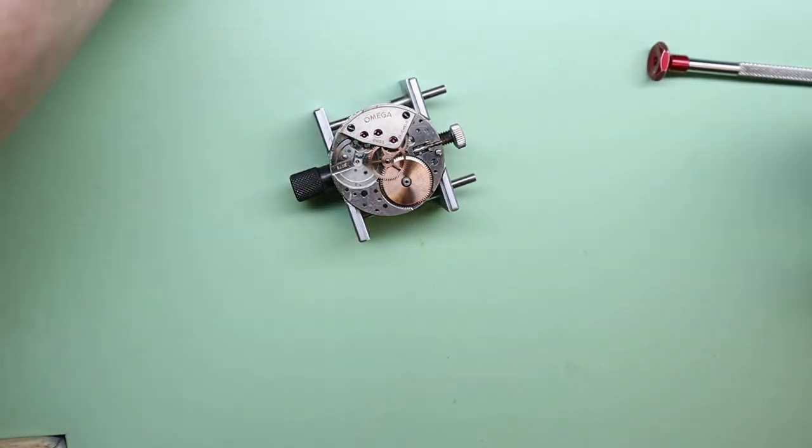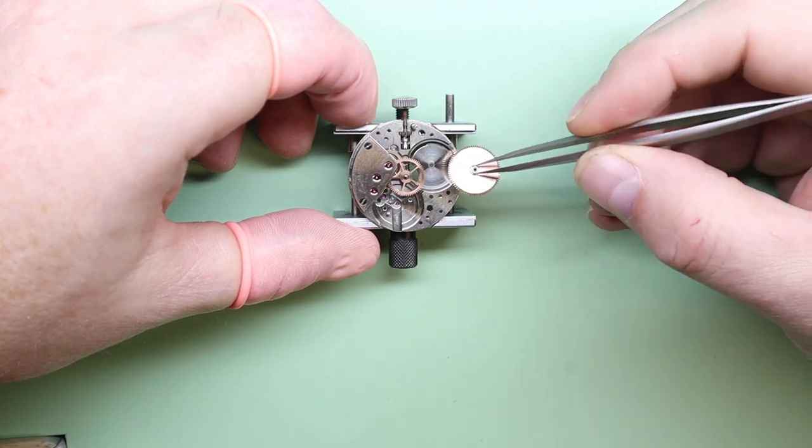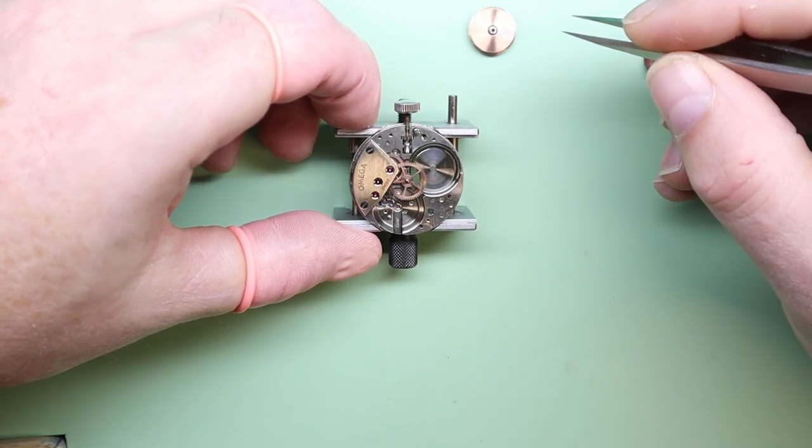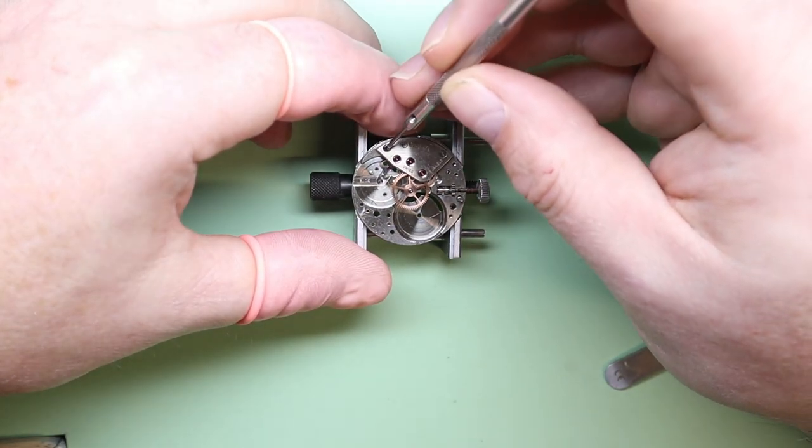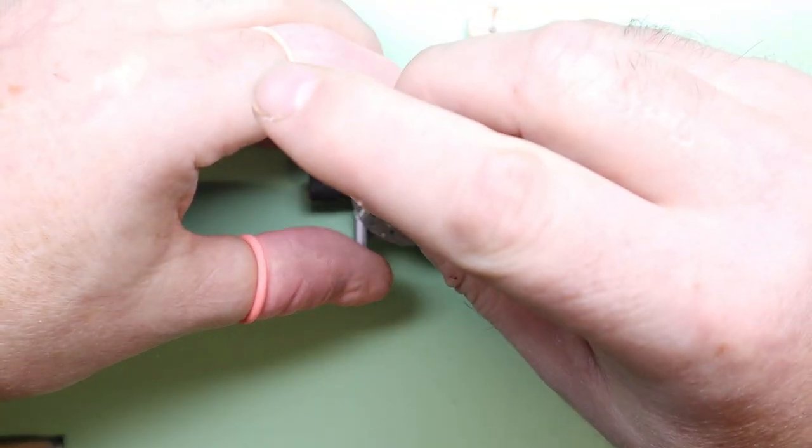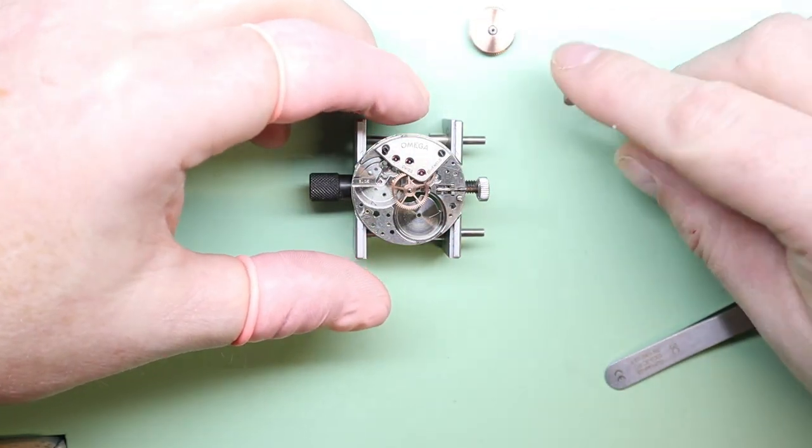Now we're going to remove the mainspring barrel, and I dare say the mainspring in that barrel is probably the original or a very early mainspring, so we'll be replacing that mainspring during this service. Now we're going to remove the train wheel bridge.